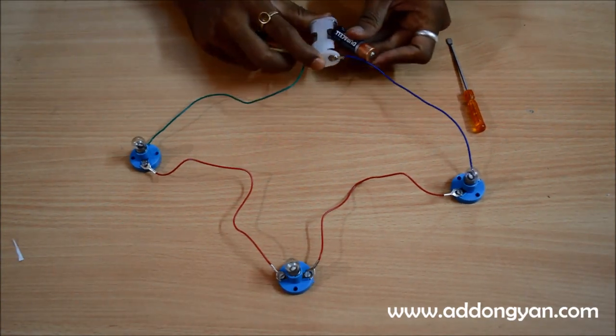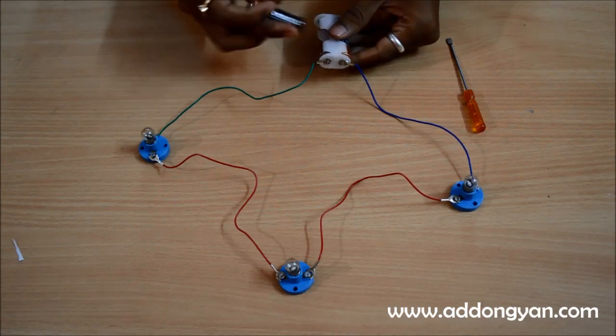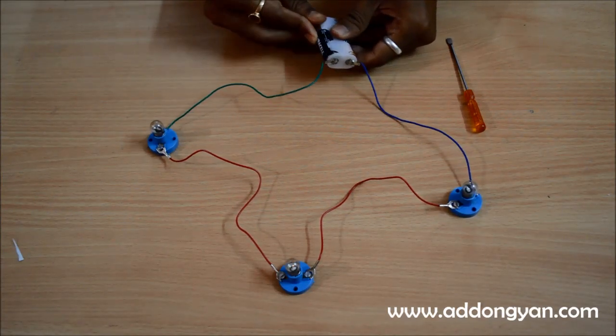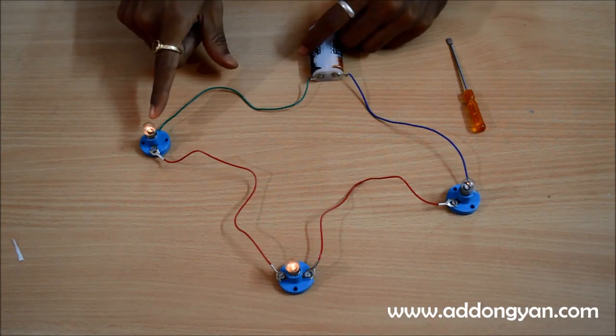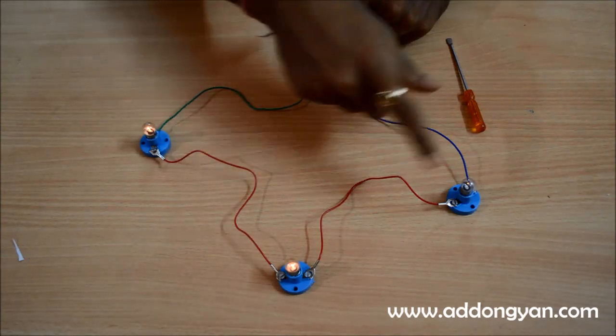So I am going to plug in the batteries here. You can see all the three bulbs glow. This one glows the most, this one actually reduces a bit and this is very very dim. That's the thing with series circuits.